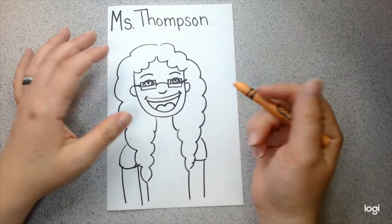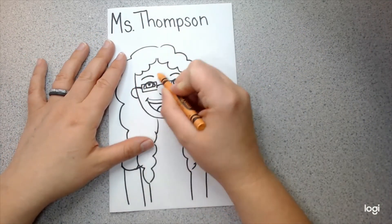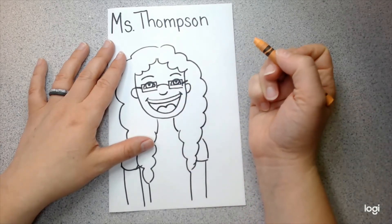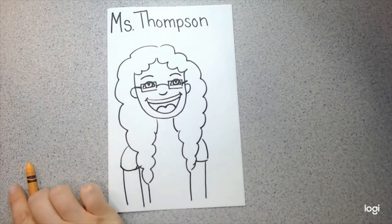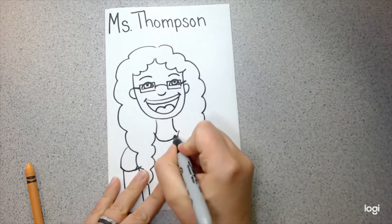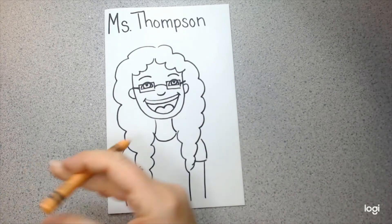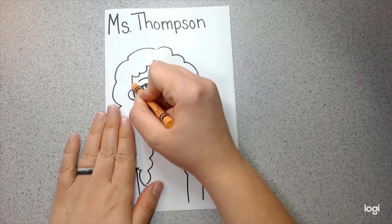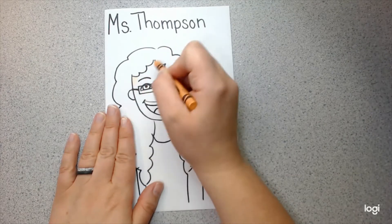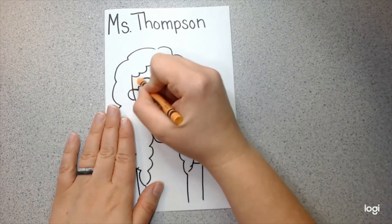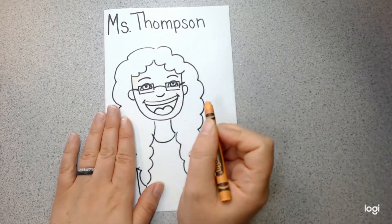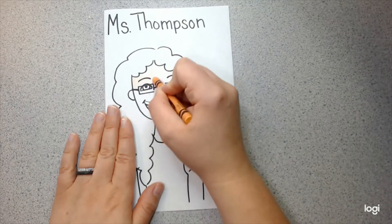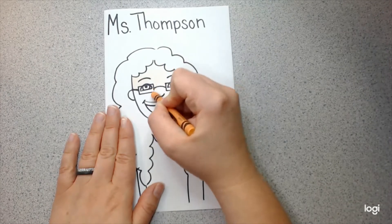When we color, it is helpful if we choose a direction to color in and use that same direction all the way down. So, for example, wait a minute. I need a shirt color. There we go. That looks better. So, I'm going to start coloring like this. And notice how my crayon is moving the same direction. I'm not going like this, like that, like that, like that. We want to make sure we choose one direction to color in and stick to it. That makes our coloring nice and tidy.